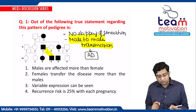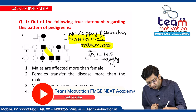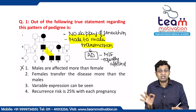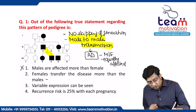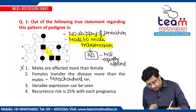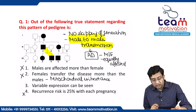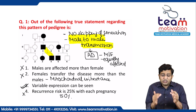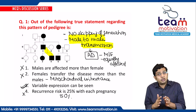In autosomal dominant, males and females are both equally affected — so the option saying 'one is not affected' is not true; that applies to X-linked recessive disorder. The option 'females transfer the disease more than males' is true for mitochondrial inheritance, not here. Recurrence risk of 25% is incorrect — it is 50% for autosomal dominant. So what remains is variable expression, and you can rule out the other three options.